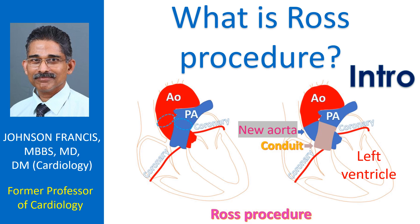Ross procedure is done for the treatment of aortic valve disease. The aortic valve is the valve between the aorta and the left ventricle. The left ventricle is the lower muscular chamber of the heart which pumps blood to the whole body.